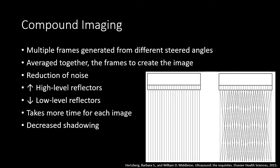Compound imaging involves generating multiple pulses at different angles within the same field of view, then averaging the images generated from each of those pulses to create the final image. This results in a reduction of noise and accentuates high-level reflectors while decreasing the contribution of low-level reflectors. It takes more time per image, resulting in a lower sweep speed and potential lag with real-time imaging. It can also reduce shadowing — which can sometimes be a disadvantage diagnostically, for example when evaluating for a small non-obstructing renal calculus, where turning off compound imaging could accentuate the shadowing.